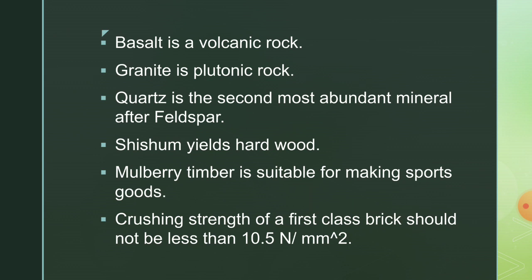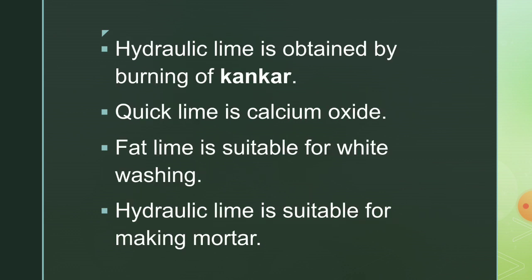Basalt is a volcanic rock and granite is a plutonic rock. Quartz is the second most abundant mineral after feldspar. Sessom yields hardwood. Mulberry timber is suitable for making sports goods. The crushing strength of a first-class brick should not be less than 10.5 N per mm². Hydraulic lime is obtained by burning of conker. Quick lime is calcium oxide. Fat lime is suitable for white washing, and hydraulic lime is suitable for making mortar.